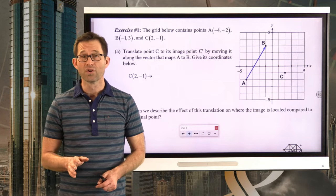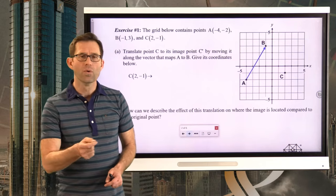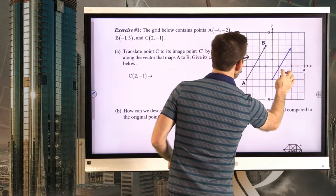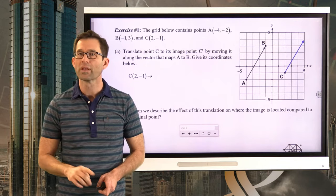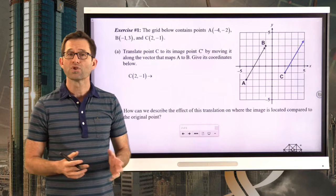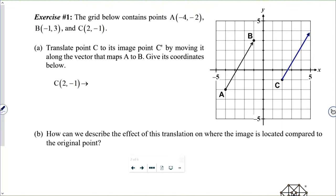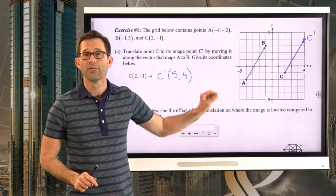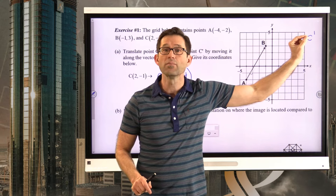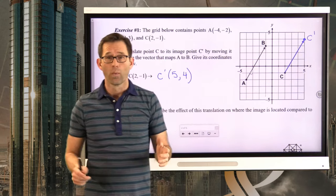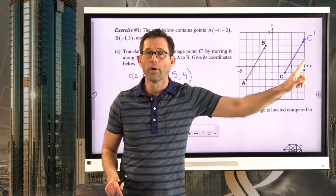I have a huge advantage here — I can take this blue vector and shift it right over to point C, which shows me exactly where C prime should be placed. So C prime is going to be right here at the coordinate point (5, 4). That's exactly the idea of a vector: if I take this point and slide it the same distance, parallel to the vector, it ends up at (5, 4).